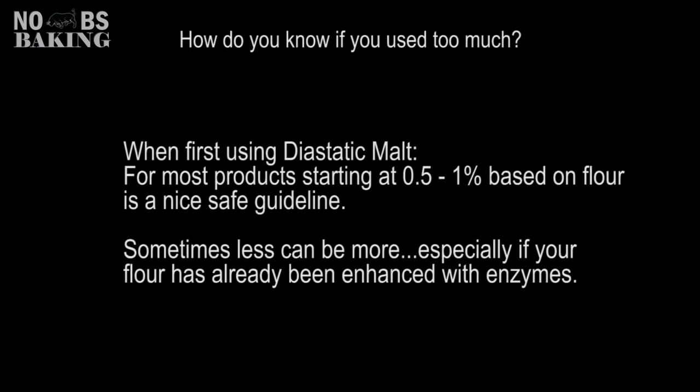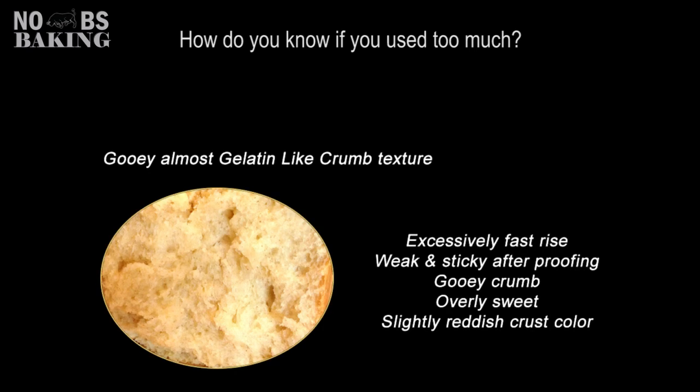Using too much enzyme-active malt can really speed up the fermentation process to a point that it's happening a bit too fast. This rapid expansion can weaken the structure of the product by excessively breaking down the starches, flooding it with gas and alcohol at a much faster rate versus a controlled rise. Common characteristics include sticky, weak dough after rise; gooey, almost gelatin-like crumb that is open and erratic in structure; or that same gooey crumb that is dense due to weakness from over-fermentation. Crust color can take on an almost reddish tinge, and the finished product may be excessively sweet or carry a stronger than normal aroma of alcohol.